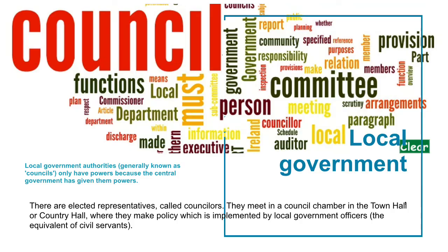Some countries such as the USA and Canada are federal. They are made up of a number of states, each of which has its own government with its own powers to make laws and collect taxes. In these countries the central governments have powers only because the states have given them power. In Britain it is the other way around — local government authorities, generally known as councils, only have powers because the central government has given them powers.